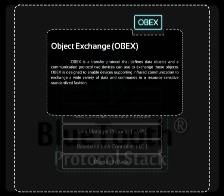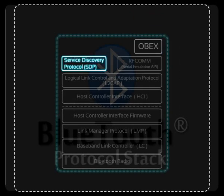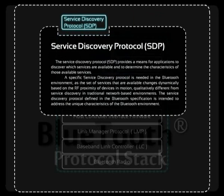Next is the Service Discovery Protocol, SDP. This defines how a Bluetooth client application shall act to discover available Bluetooth server services and their characteristics. The protocol defines how a client can search for a service based on specific attributes without the client knowing anything of the available services. This is available when the client enters an area where a Bluetooth server is operating, and it also provides functionality for detecting when a service is no longer available.